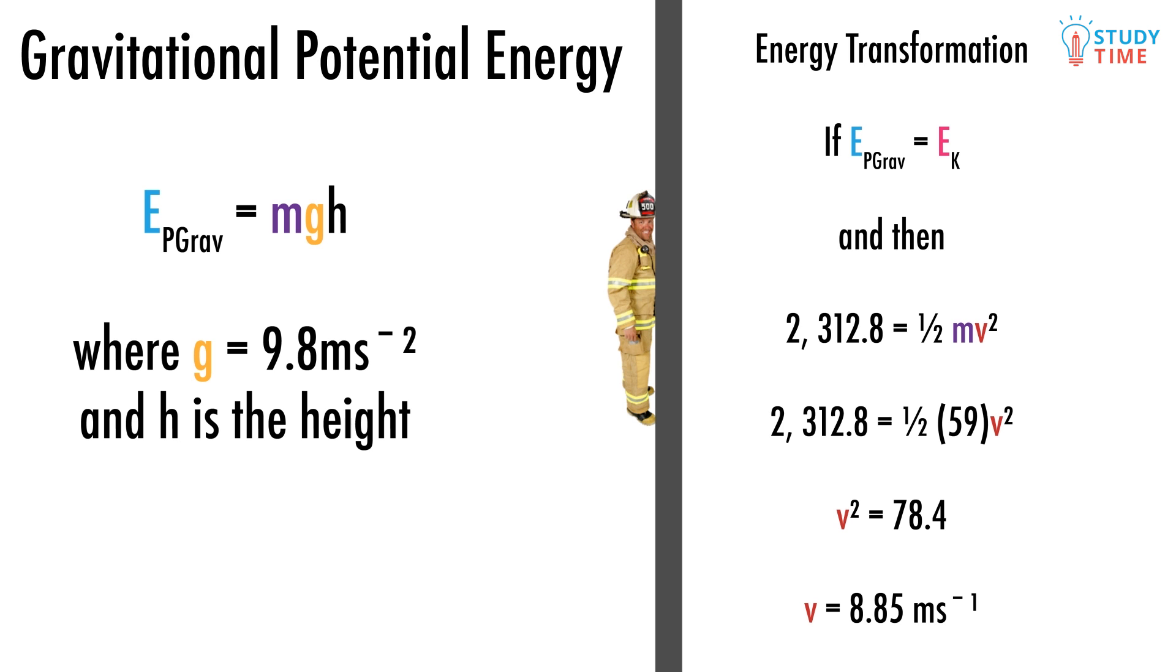And then 2312.8 joules must equal half mv squared. We were able to stick in 2312.8 for our gravitational energy because we've already worked it out, and nothing has changed in those few seconds, right? Since we know that your mass is still 59 kilos, we can put that in for m. Then all we do is solve for v.